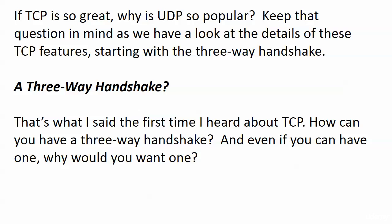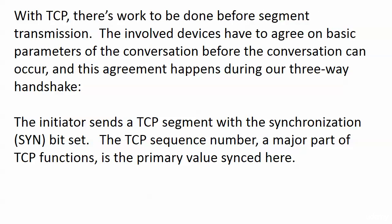Keep that question in mind as we look at a couple of TCP details, starting with the three-way handshake. With TCP, remember it's connection-oriented — the involved devices, the sender and the receiver, have to agree on basic parameters of the conversation before the conversation can occur. This agreement happens during the three-way handshake, where they agree on certain rules and where certain numbers are going to begin.